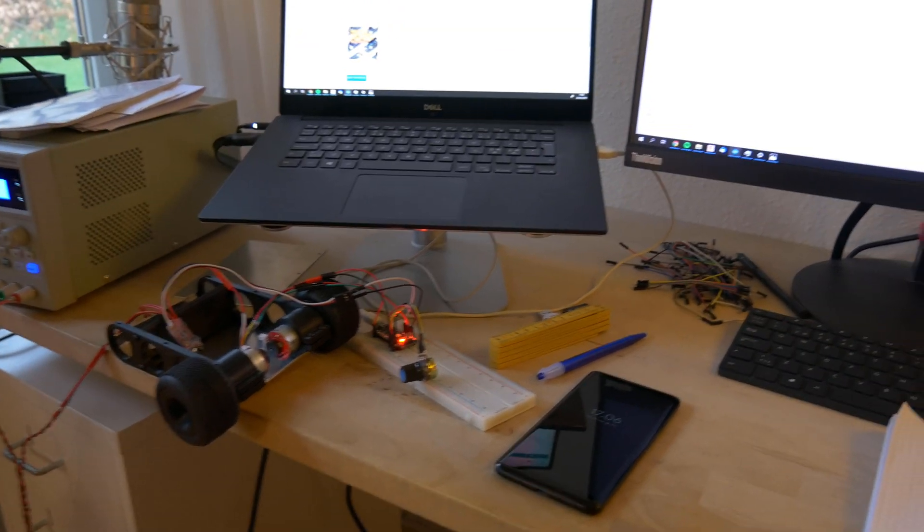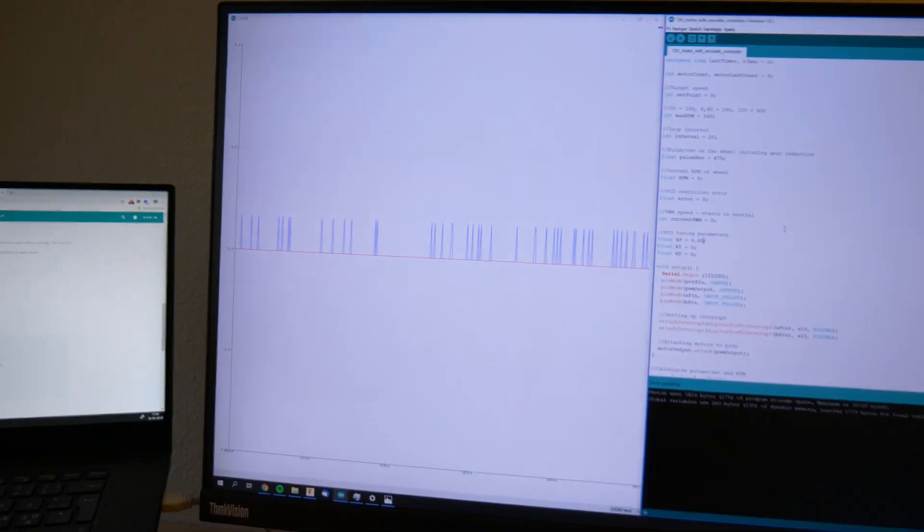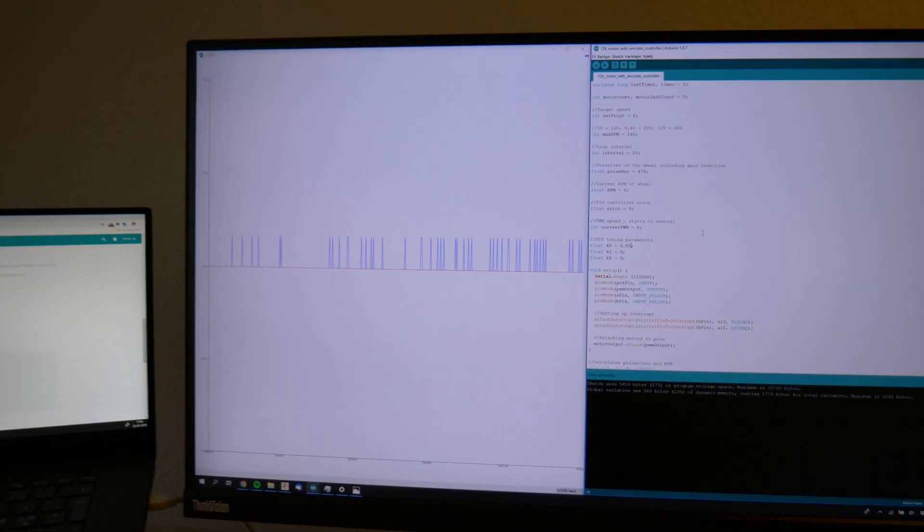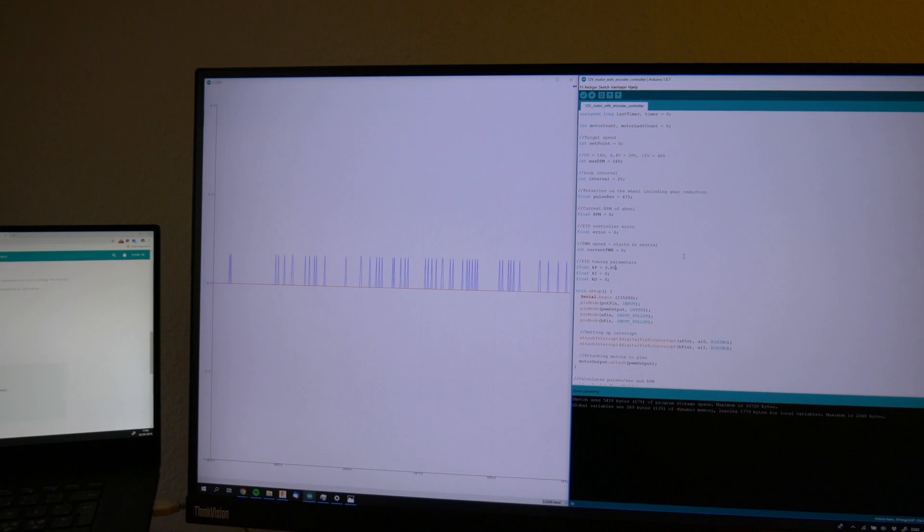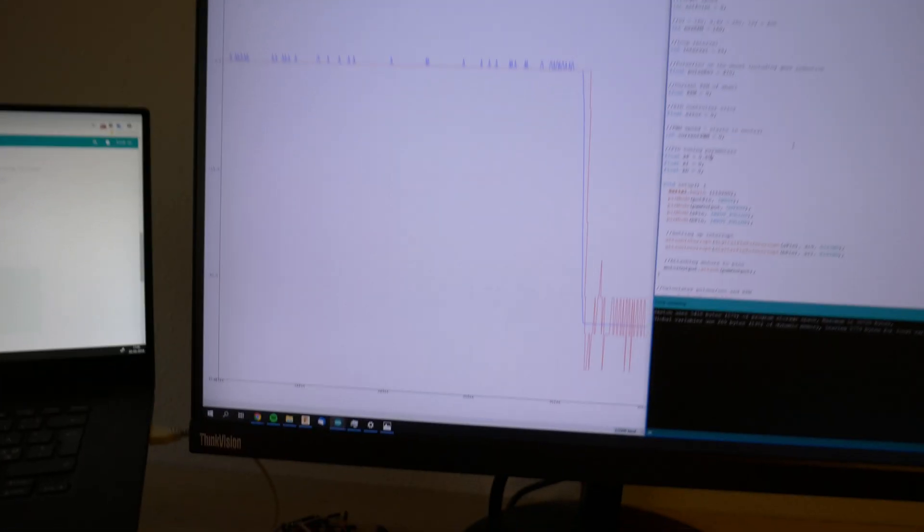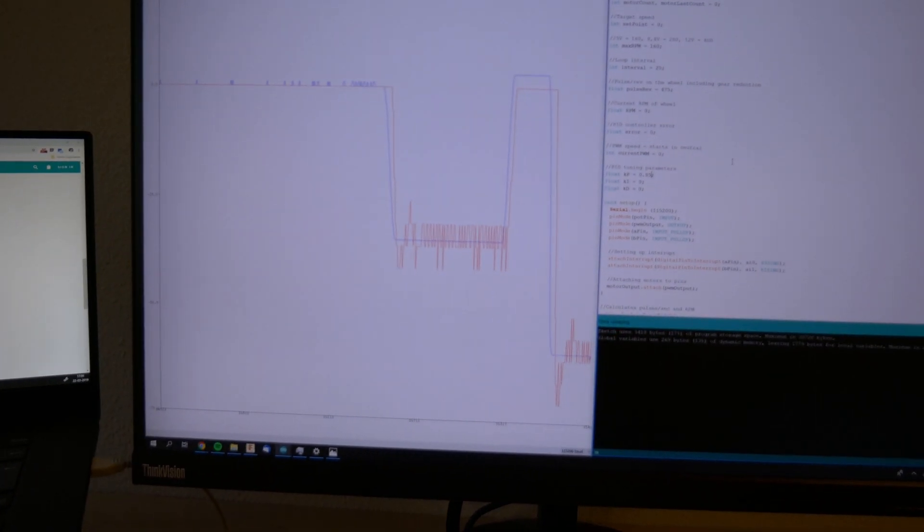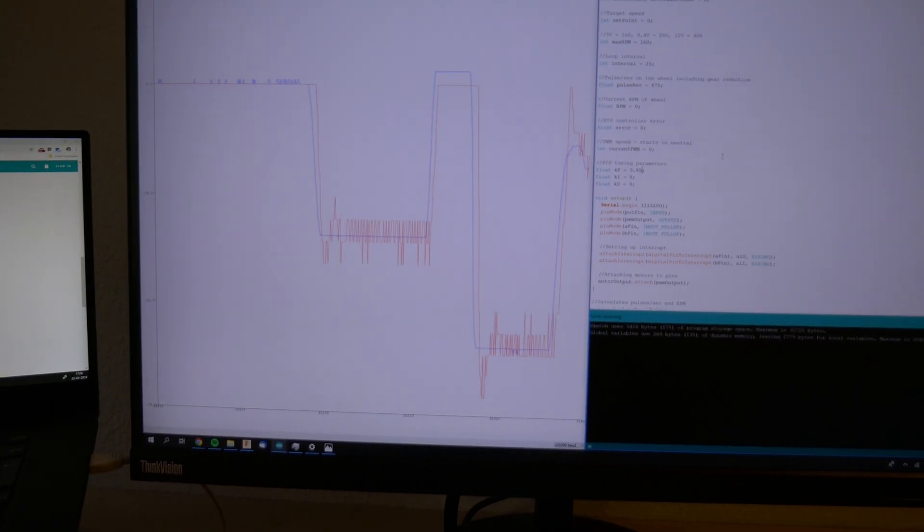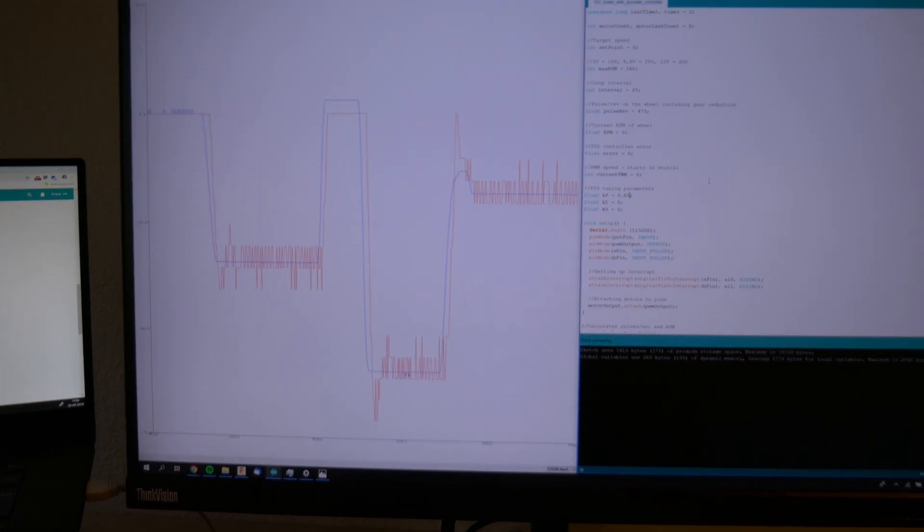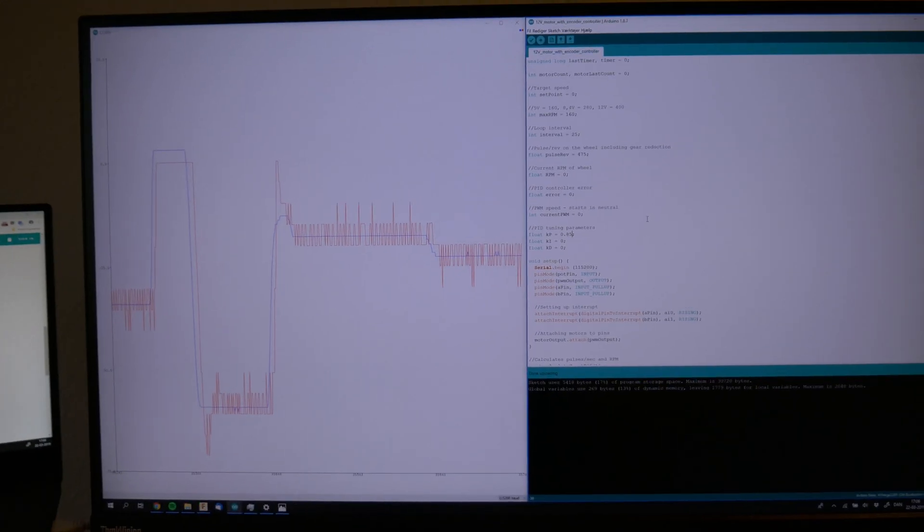The proportional part of the controller is now complete. And as you can see on the screen, I am plotting the set point against the measured value. So as I turn the potentiometer, the system is going to react. The blue line represents the set point and the red line represents the actual motor speed.